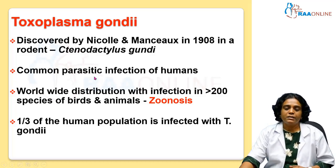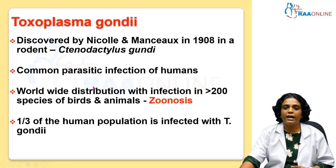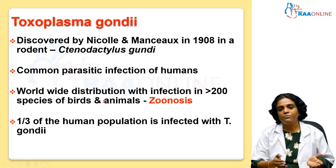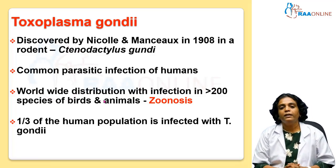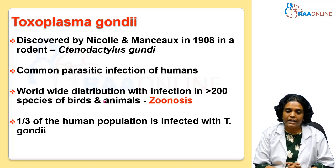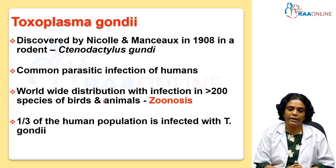It is a very common parasite causing infection in humans, and it is widely distributed in many animals as well as in birds. Humans get the infection from the animals, and this is what is referred to as zoonotic infection. Mostly the feline animals will be the definitive host for this infection, and these feline hosts transmit the infection to humans.